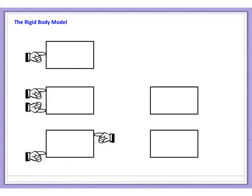Previously, when we have looked at situations in mechanics, we have used the particle model to simplify situations. When we're looking at problems involving moments - for instance, which involve things like seesaws - the particle model becomes inadequate. That's because in the particle model, we assume that all forces act at a single point. But that's not true of the seesaw. We can't model two children sitting at either end as all the force acting at one point. It simply doesn't work, so we have to introduce a new kind of model.